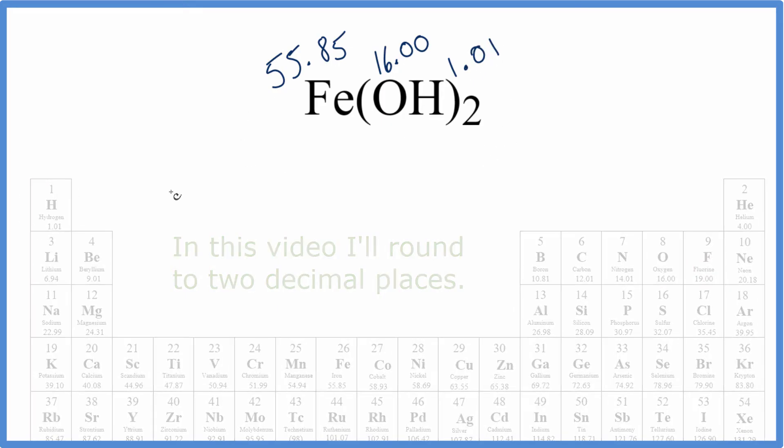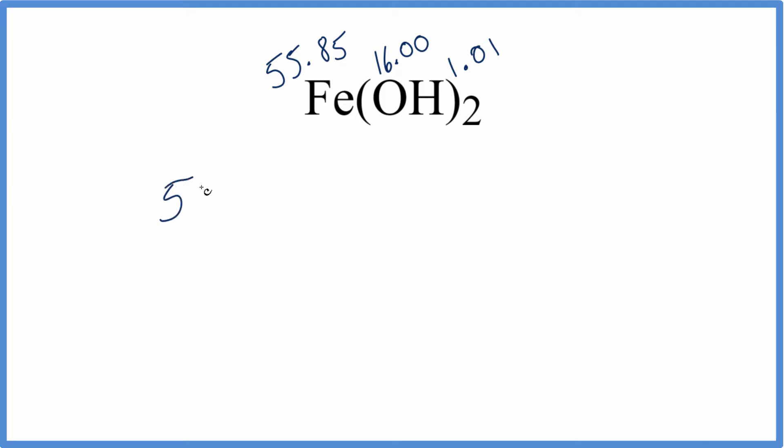So we're going to add these numbers up. We'll write 55.85 for our iron, and we'll add, using the parentheses just like we have in the chemical formula.